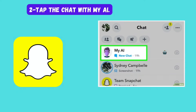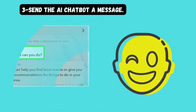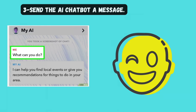Tap the chat with MyAI. The first time you open your conversation with MyAI, you'll need to tap Accept to agree to the terms. Then send the AI chatbot a message. To try it out, send a message that says 'What can you do?' You can also ask the bot to play a game, help you come up with chat and story ideas, write poetry, give restaurant recommendations, suggest great birthday gifts, and just about anything else you can think of. MyAI will respond in a private message. The bot is conversational — if you don't get the response you want, ask follow-up questions or give it more information.